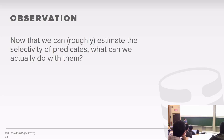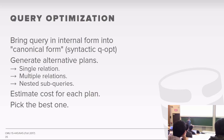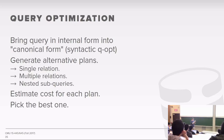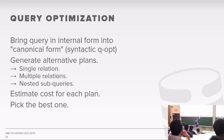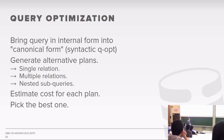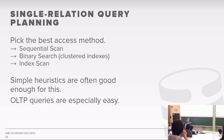Now that we know how to roughly estimate selectivity, what can we do with it? This is where we get into the actual query optimization side: using our cost model based on selectivities to estimate the cost of different query plans. You generate a bunch of alternative plans, use the cost model with your statistics or sampling to estimate cost for each, and identify which is better. Whatever query plan has the lowest cost is the one you pick.